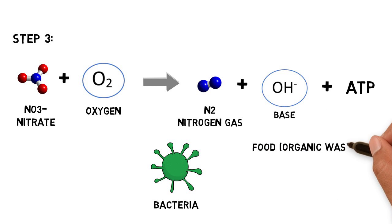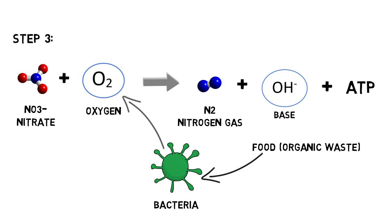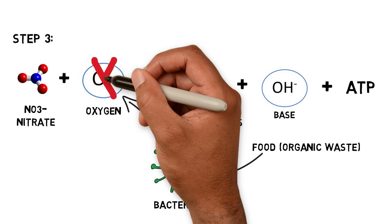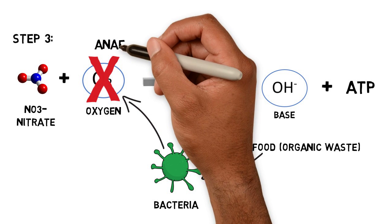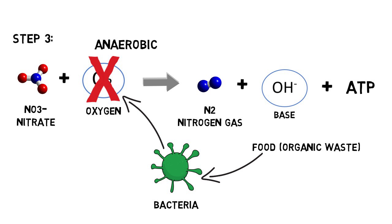Denitrifying bacteria need food in the form of organic waste and oxygen to make this conversion. However, as denitrification occurs under anaerobic conditions, denitrifying bacteria are forced to take oxygen from the nitrate.